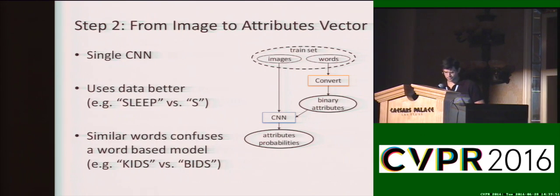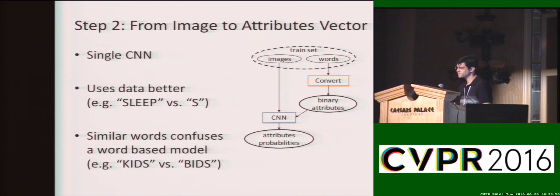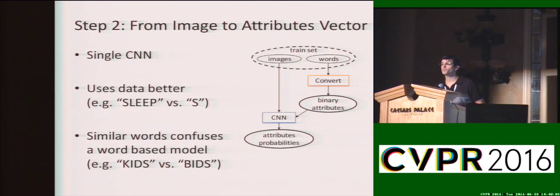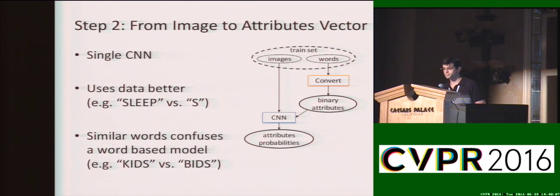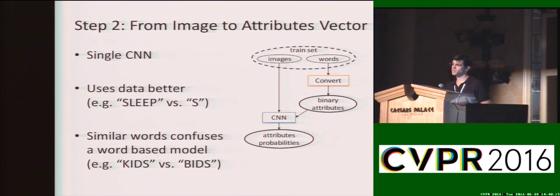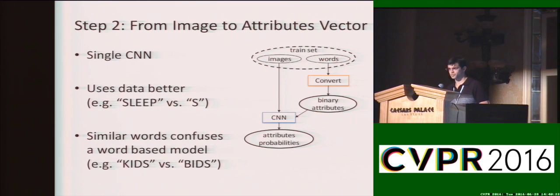The second advantage is better described as a lack of a disadvantage. Consider the words 'kids' and 'bits' — these words have very similar structure, but for a word-based model they are different, just like 'kids' and 'encyclopedias' are different. Since these two words do have common similarities, this makes a word-based model harder to train to distinguish between the two, whereas an attributes-based model uses this similarity to its advantage.